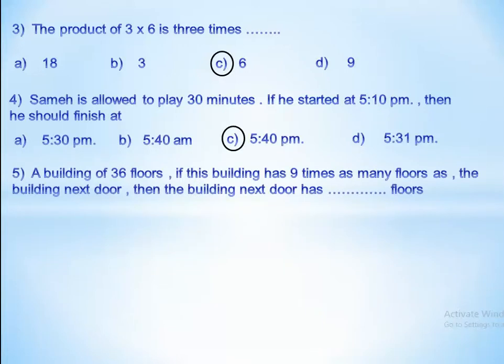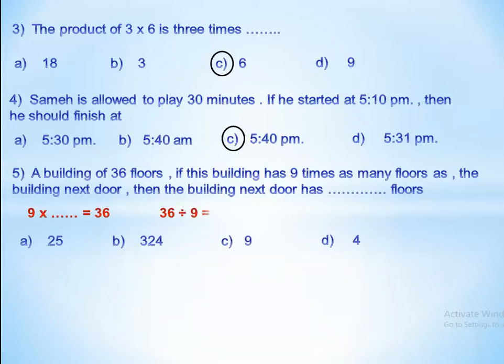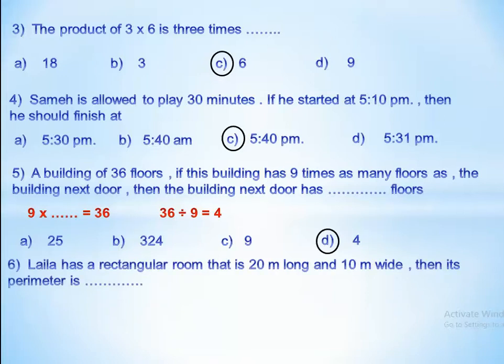A building has 36 floors. If this building has nine times as many floors as the building next door, then the building next door has how many floors? That means 9 times which number equals 36 — we divide 36 by 9. We look for a number that multiplied by 9 gives 36. The answer is 4.